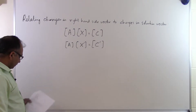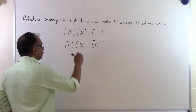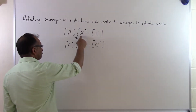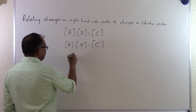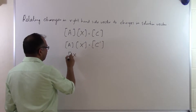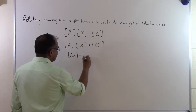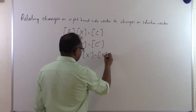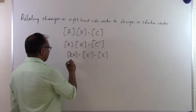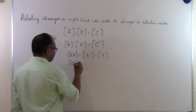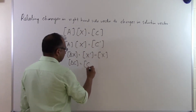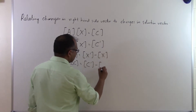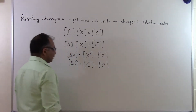What we want to determine is how the change in the right hand side is related to the change in the solution vector. We define delta X as X prime, the new solution, minus the previous solution. We also define delta C as the changed right hand side minus the original right hand side.